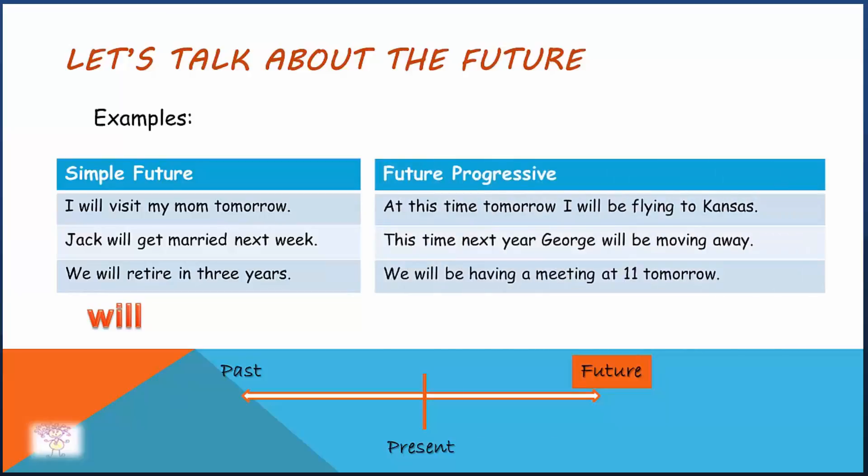And the following are in future progressive. At this time tomorrow, I will be flying to Kansas. This time next year, George will be moving away. We will be having a meeting at 11 tomorrow. Future progressive is formed with will be plus verb ing.